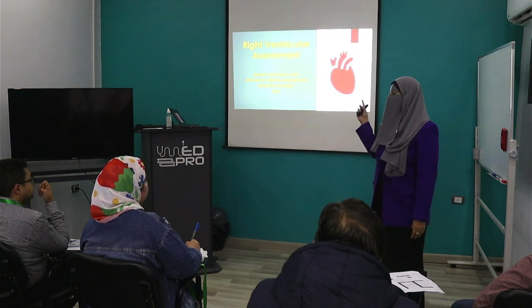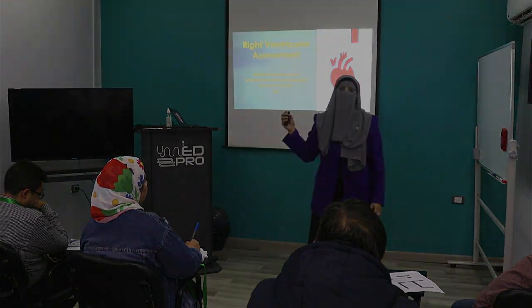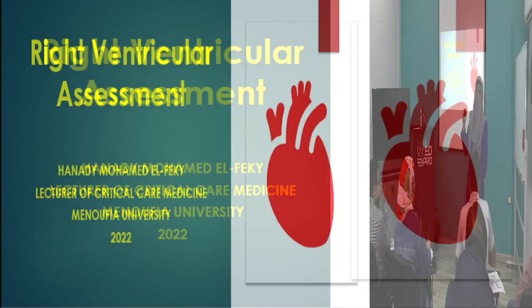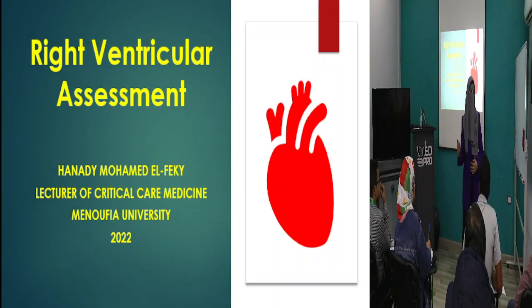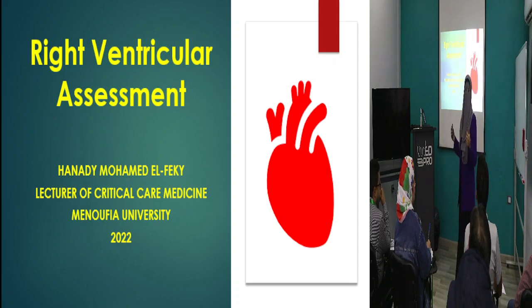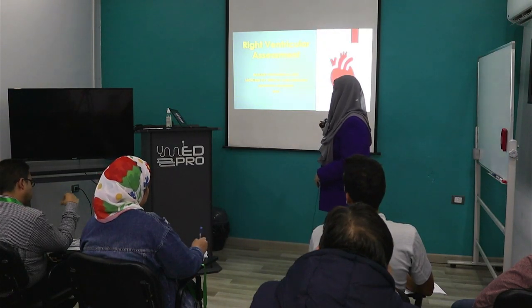We will talk about how to assess the right ventricular function. We have three lectures: how to assess right ventricular function, how to assess cardiac tamponade, and how to assess pericardial and pulmonary embolism. We will start first with a short lecture about how to assess RV function, then we will take a short break for hands-on, and return to cover pericardial effusion and pulmonary embolism.